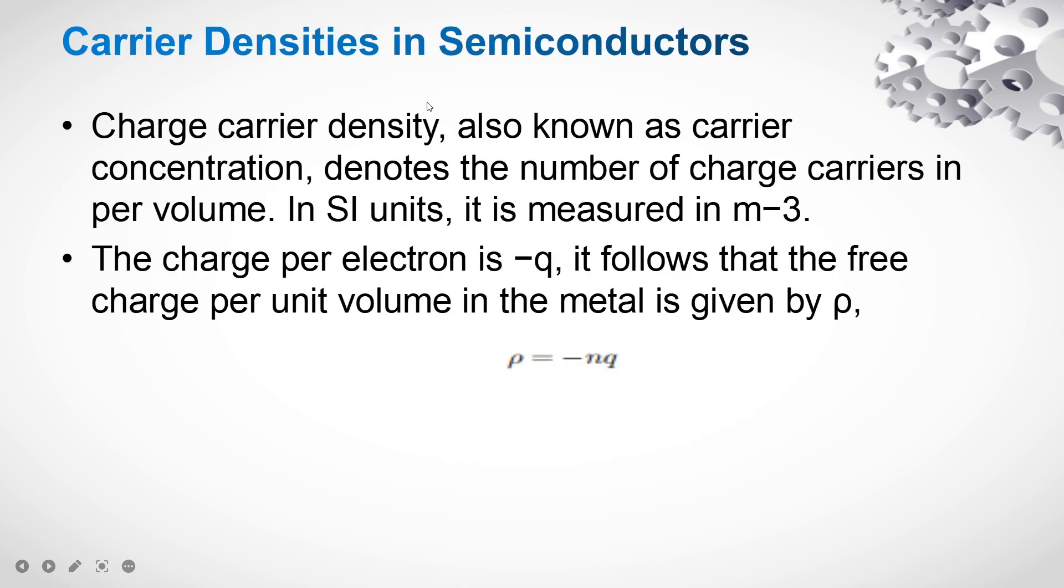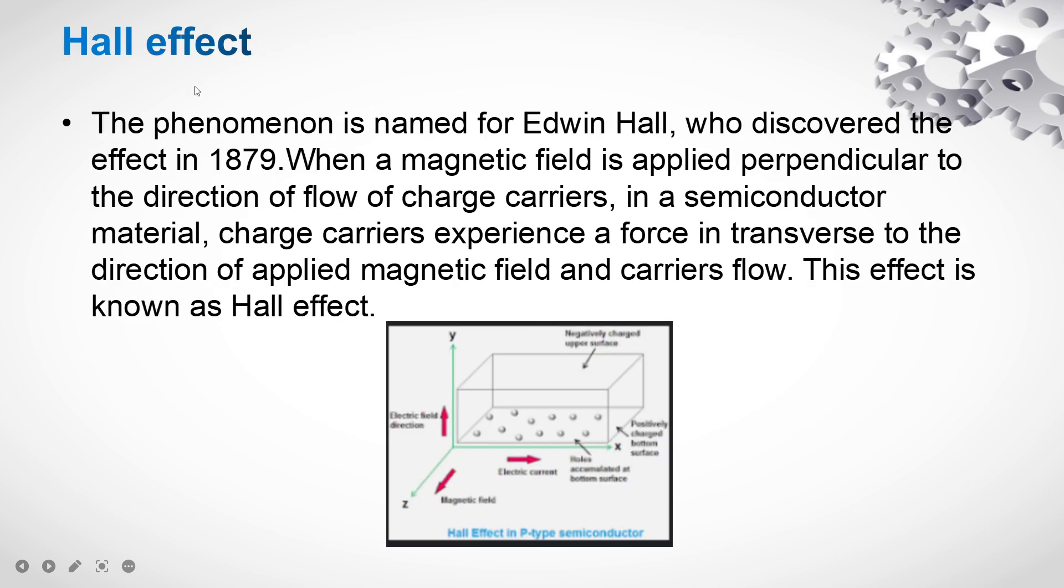The carrier density. Charge carrier density, also known as carrier concentration, denotes the number of charge carriers per unit volume. SI unit is measured in per meter cubed. Charge per electron is minus q, so the charge per unit volume is given by rho equals N times q, where N is the number of electrons and q is the charge per electron.